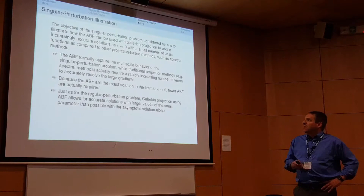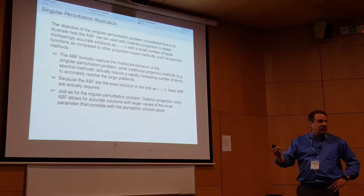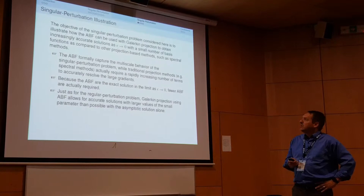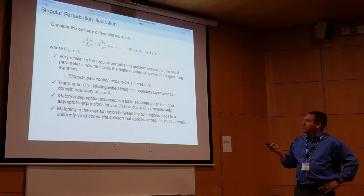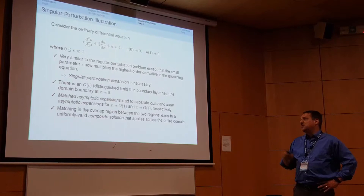Now let's look at a more interesting singular perturbation illustration, more indicative of a multi-scale problem. The equation is almost the same, but now epsilon multiplies the highest-derivative (second-derivative) term. Setting epsilon to zero reduces the order of the equation — that's the singular perturbation. The distinguished limit reveals an order-epsilon thin boundary layer at the left boundary.